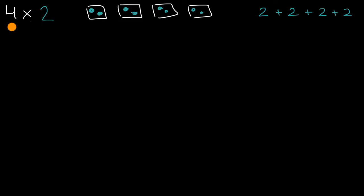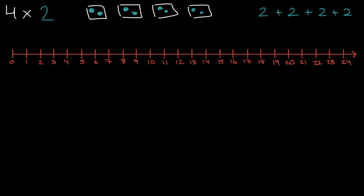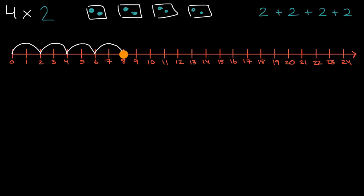We can also think about that on a number line. So we could imagine four times two being: one times two, two times two, three times two, and four times two. We started at zero and we took four hops of two along the number line to end up at eight — we went from zero to two, four, six, eight. We just skip counted our way to eight.